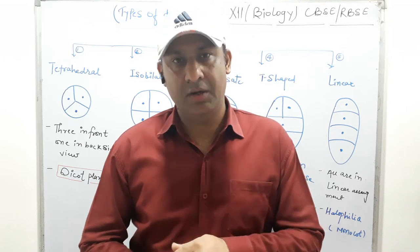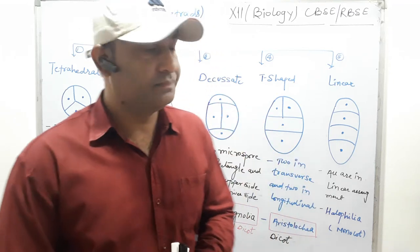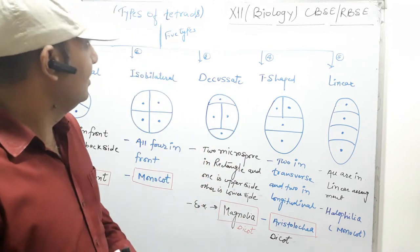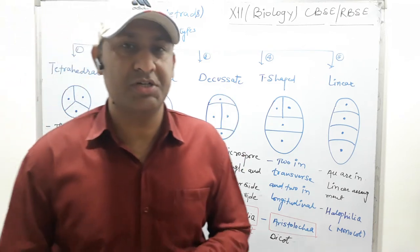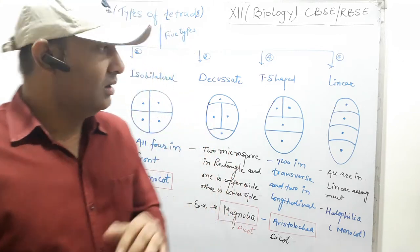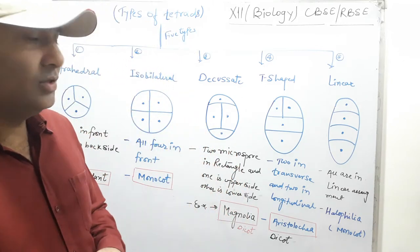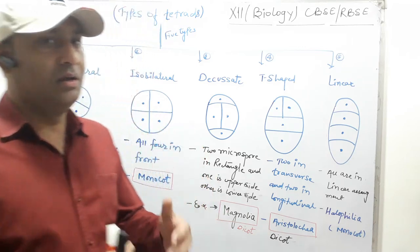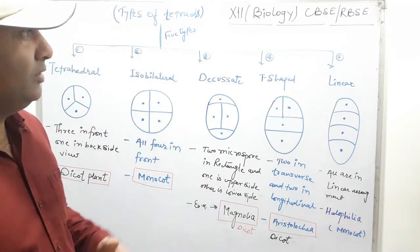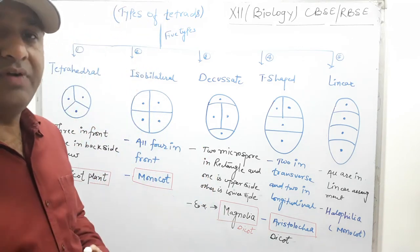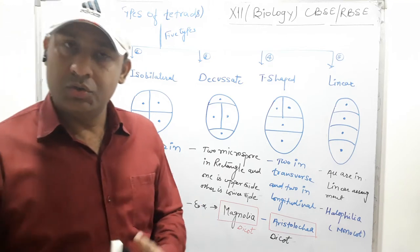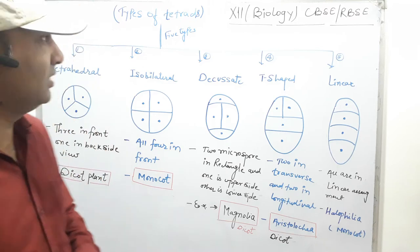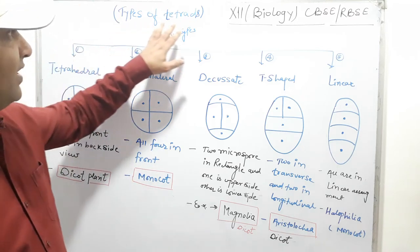Welcome students to my biology class. Today we will take the next topic of the chapter which is sexual reproduction in angiospermic plants. In the last class we discussed microsporogenesis and development of male gametophyte. Now after the development of male gametophyte, which is a tetrad, our next topic as per the RBSC concerned is the types of tetrads.